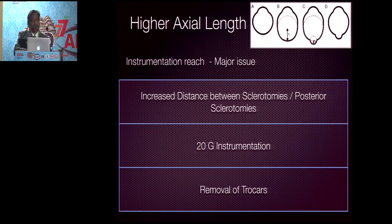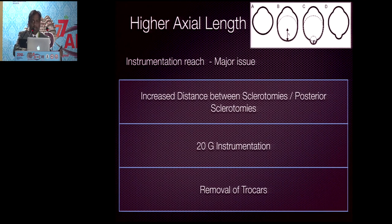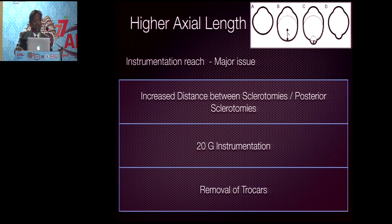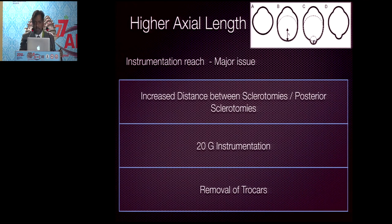With higher axial length, different patterns exist in myopes — do a B-scan before surgery to know the scleral pattern and axial length. Be prepared to increase the distance between sclerotomies for instrument reach. The ora is quite posterior in myopes, so sclerotomies can be further towards the posterior side. Alternatively, use 20-gauge instrumentation with longer length or remove the trocars to increase reachability.